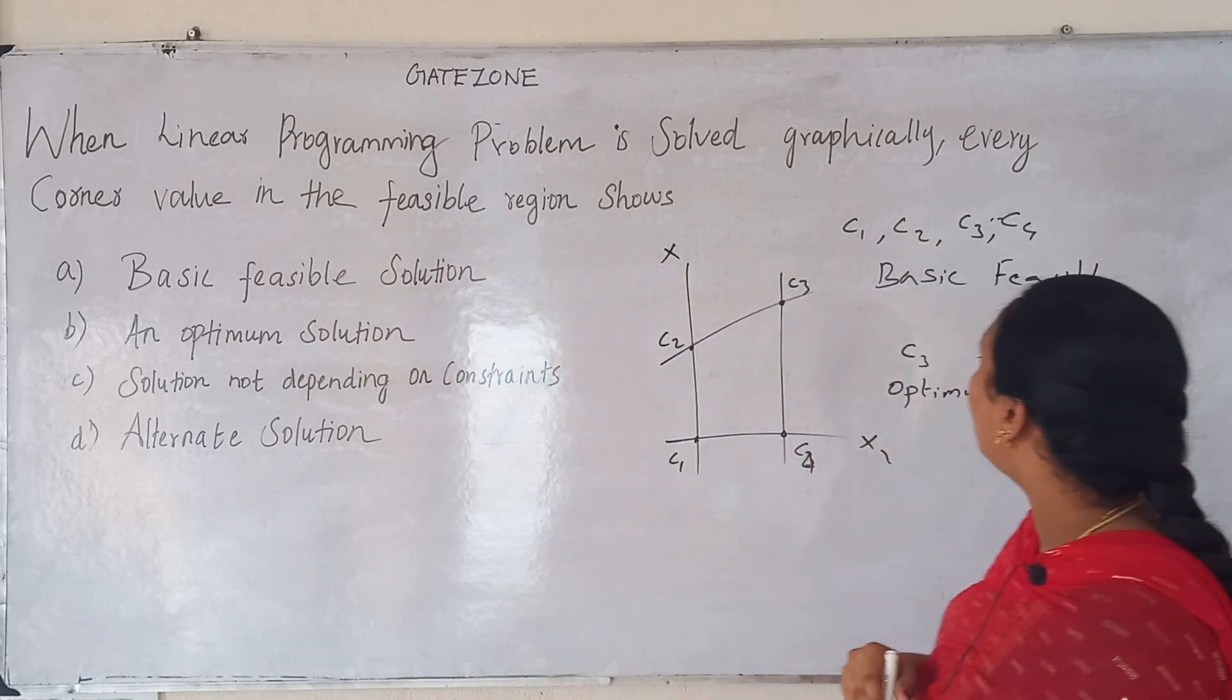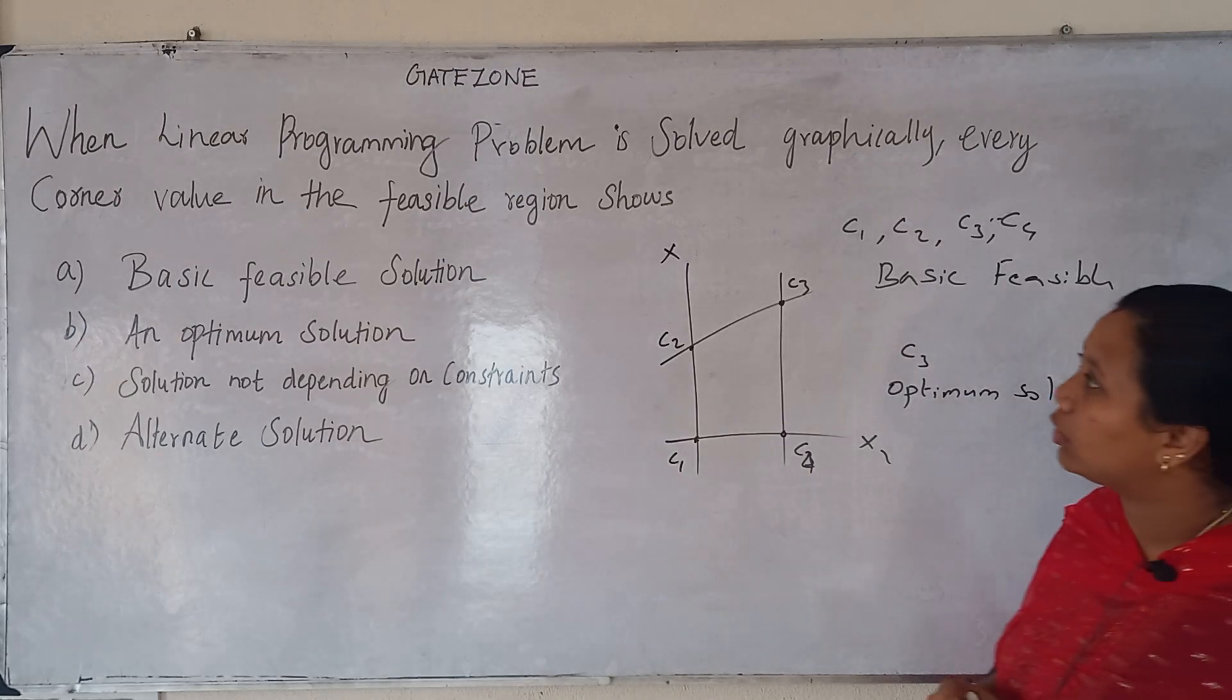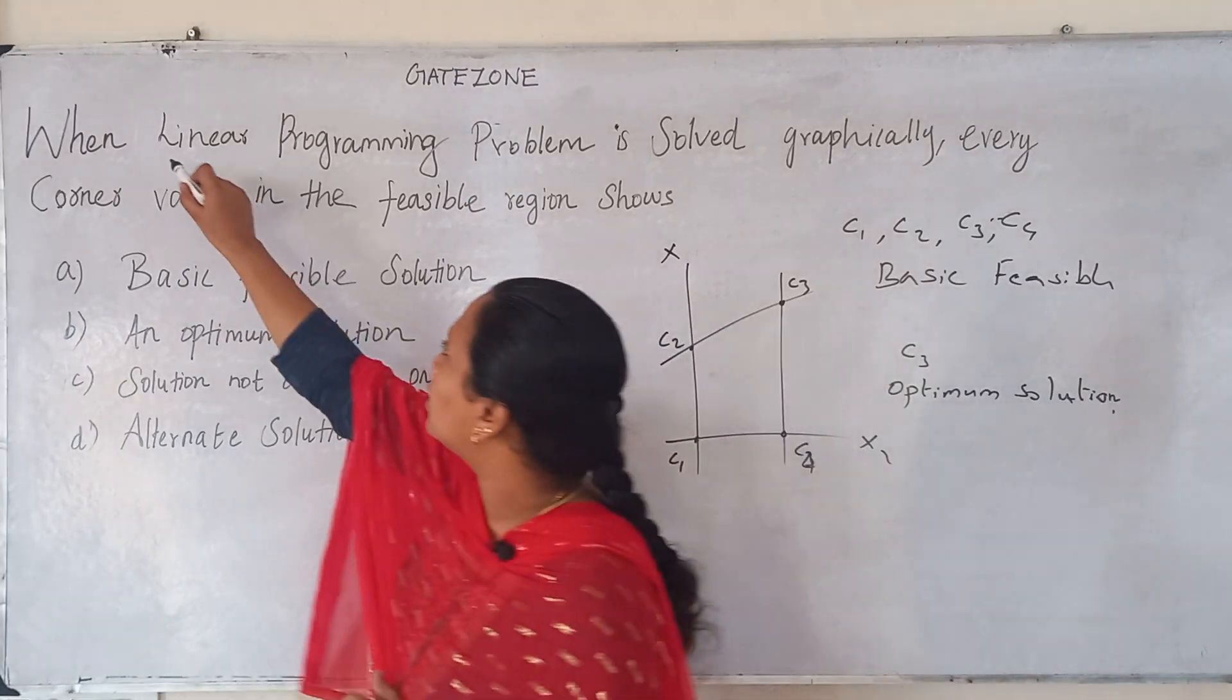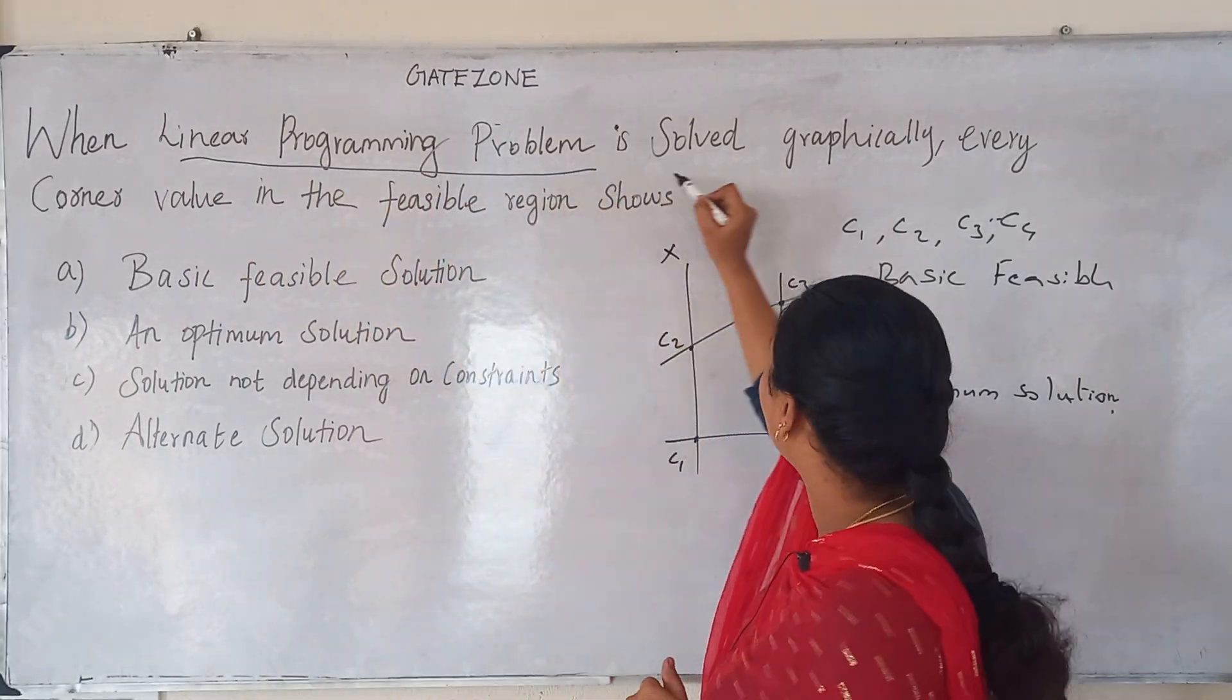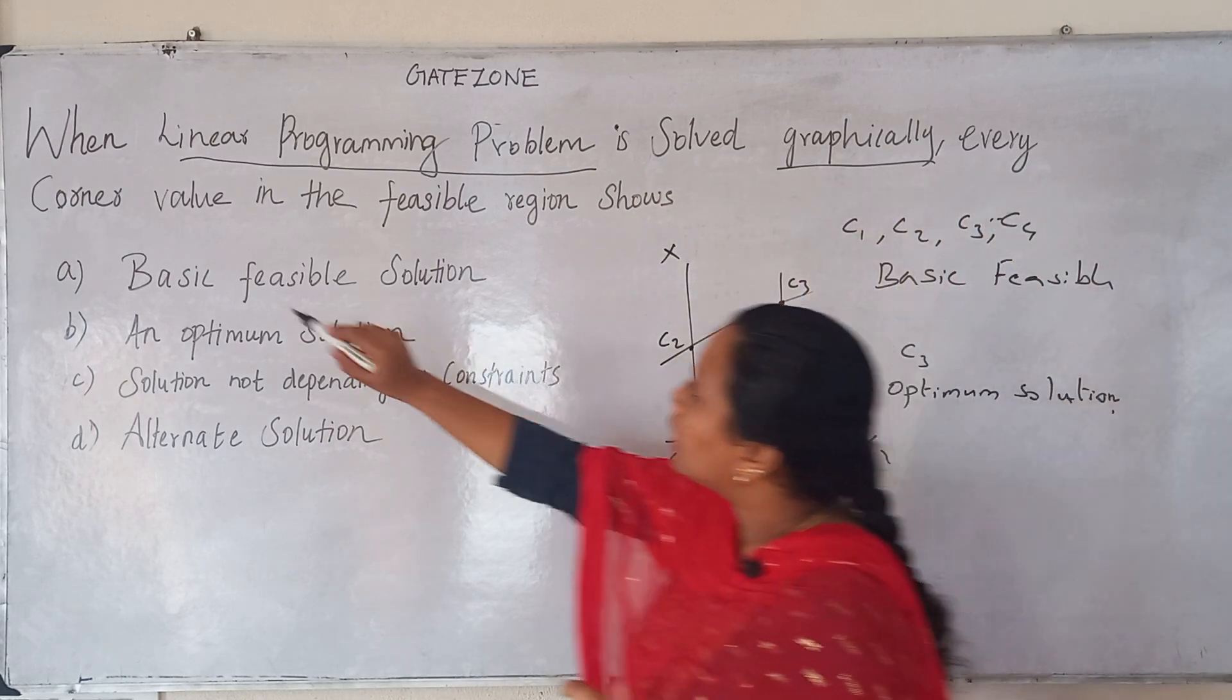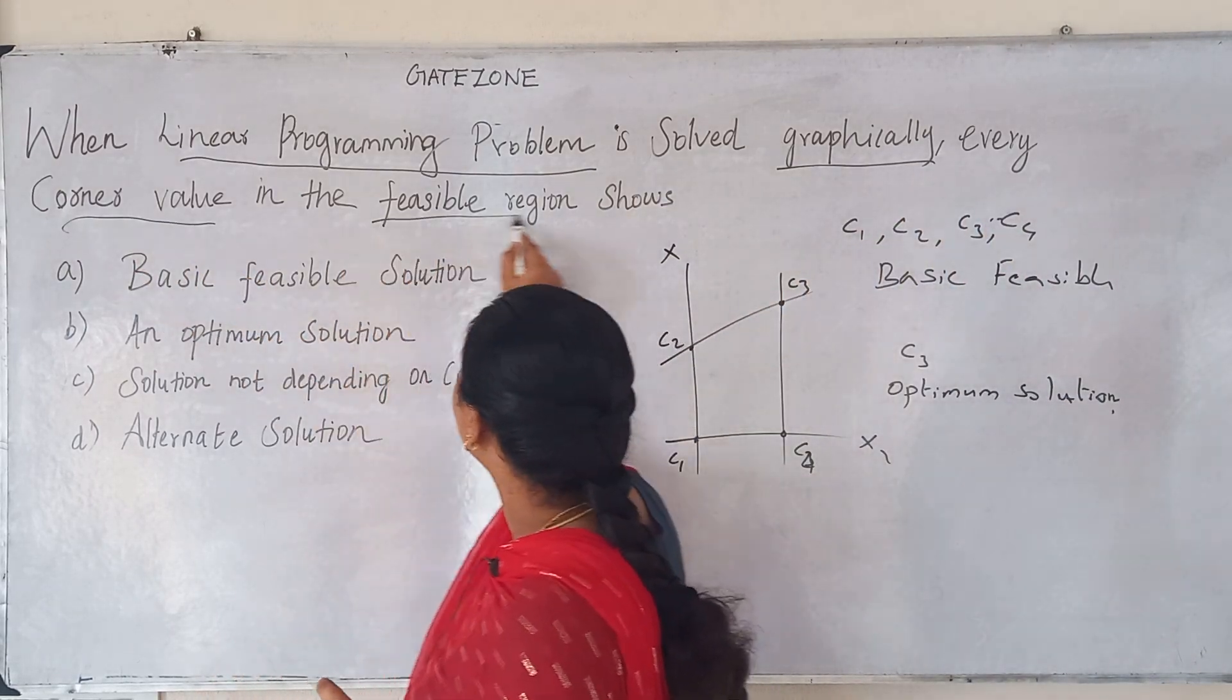When linear programming problem is solved graphically, every corner value is solved in the feasible region. How to solve linear programming problem? Every corner is solved in the feasible region.